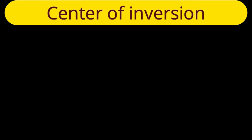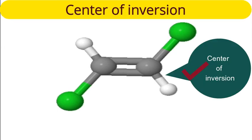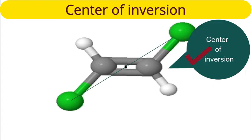Let us see one more example: the planar trans-dichloroethylene molecule. Center of symmetry exists in this molecule. If you take a point from a chlorine atom, draw a line up to the center, and extend the line to the same extent, you will get the other chlorine atom. The same is true for hydrogen and carbon. Since the center of inversion is applicable for each atom and each point in the structure, center of inversion exists in trans-dichloroethylene.